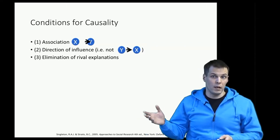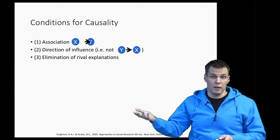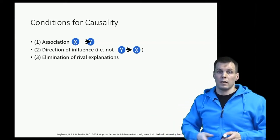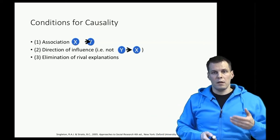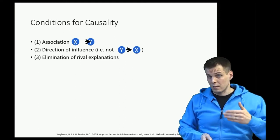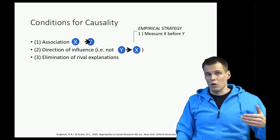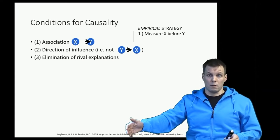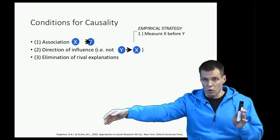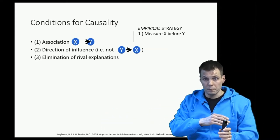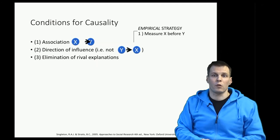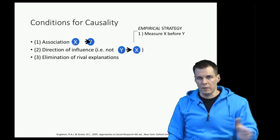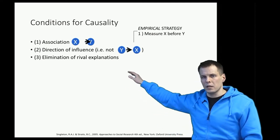How do we rule out the possibility that the correlation is driven by an industry effect that influences both CEO selection and profitability, or by a firm size effect? A very simple strategy for addressing the direction of causality is to measure the cause before the effect. If we measure CEO gender now and profitability the following year, it's implausible to claim that future profitability caused the company to choose a woman CEO today — though profitability expectations could play a role, but that's a separate matter.